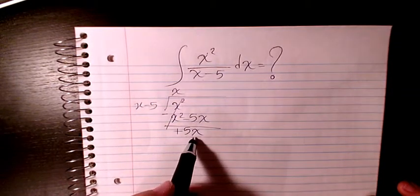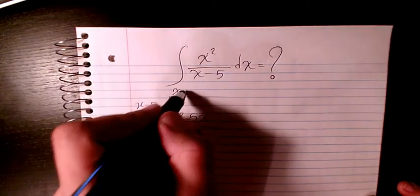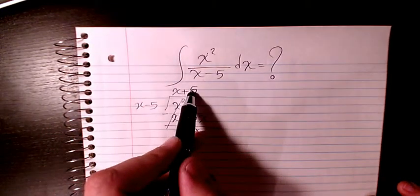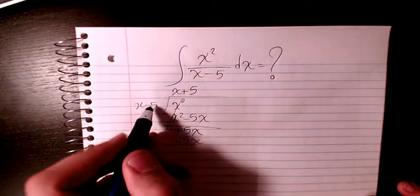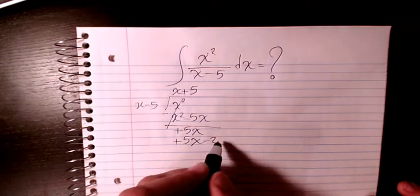And then next thing I need to have positive 5. So positive 5 times x will be positive 5x, and plus 5 times negative 5 will be negative 25.